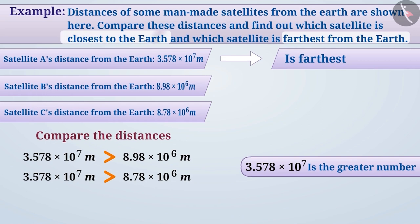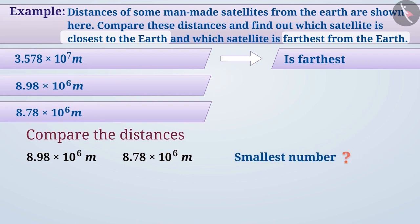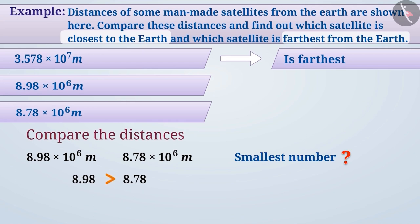Now, let's find out which satellite is closest to the earth. For this, we will compare the two remaining distances: 8.98 × 10 to the power of 6 metres and 8.78 × 10 to the power of 6 metres, and find out which is the smallest number. Here, the power of 10 is equal in both numbers, so we compare the decimal parts. Since 8.78 is smaller than 8.98, therefore 8.78 × 10 to the power of 6 metres is smaller. We can say that among all 3 satellites, the closest satellite to the earth is satellite C.